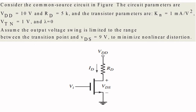So this is the problem statement. Consider the common source circuit shown in the figure. The circuit parameters are: supply voltage VDD is 10, RD is 5 kilo ohm, and the transistor parameters KN=1, threshold voltage VT=1, and lambda=0. Assume that the output voltage swing is limited to the range between the transition point and VDS of 9.